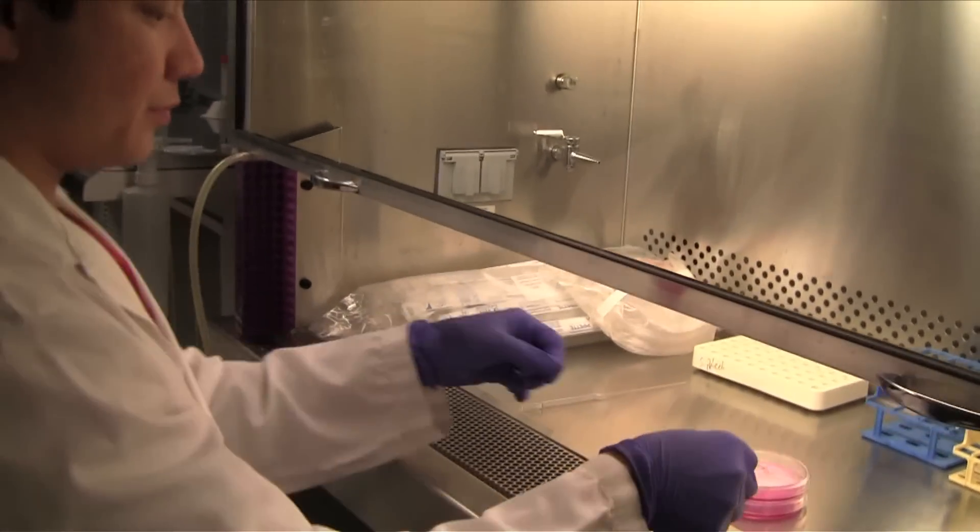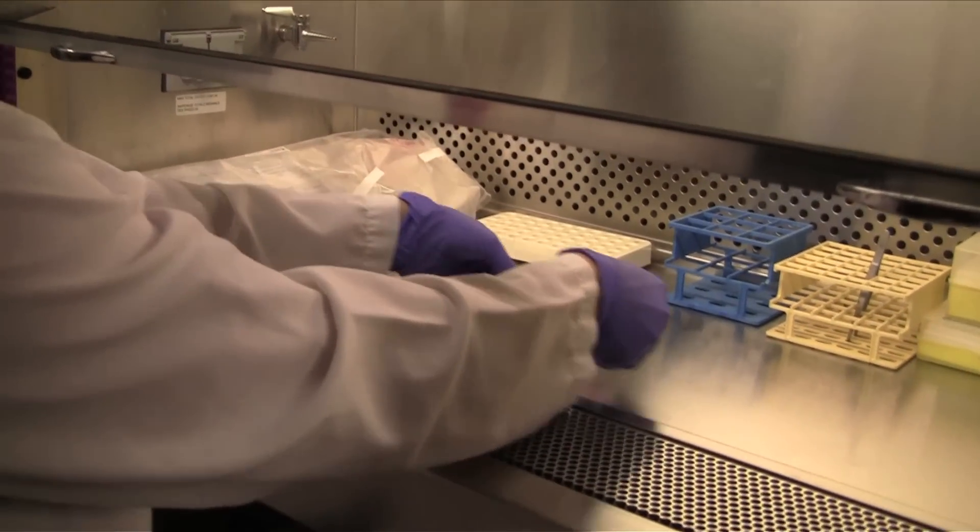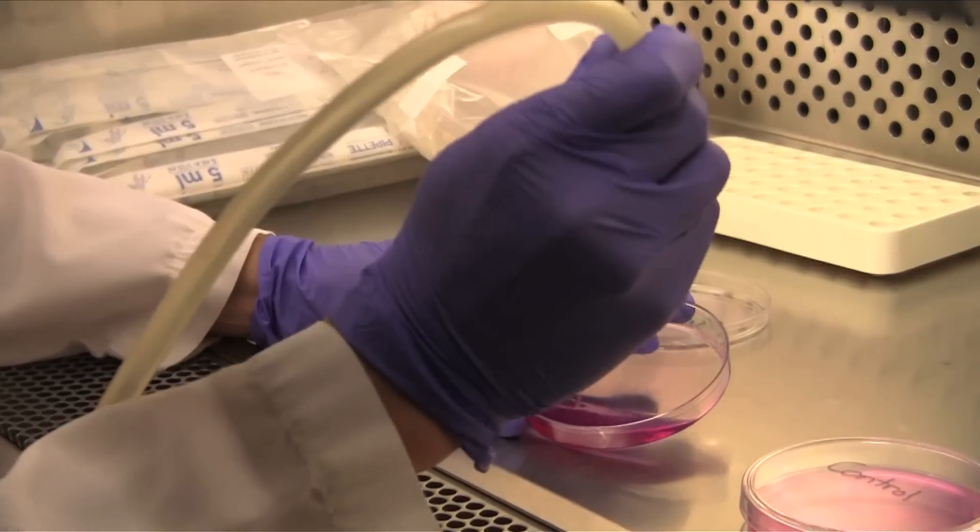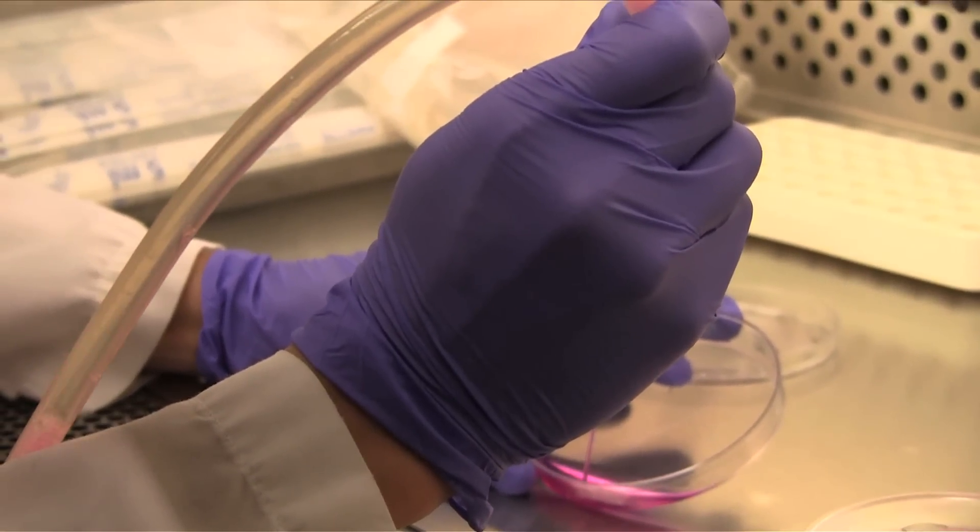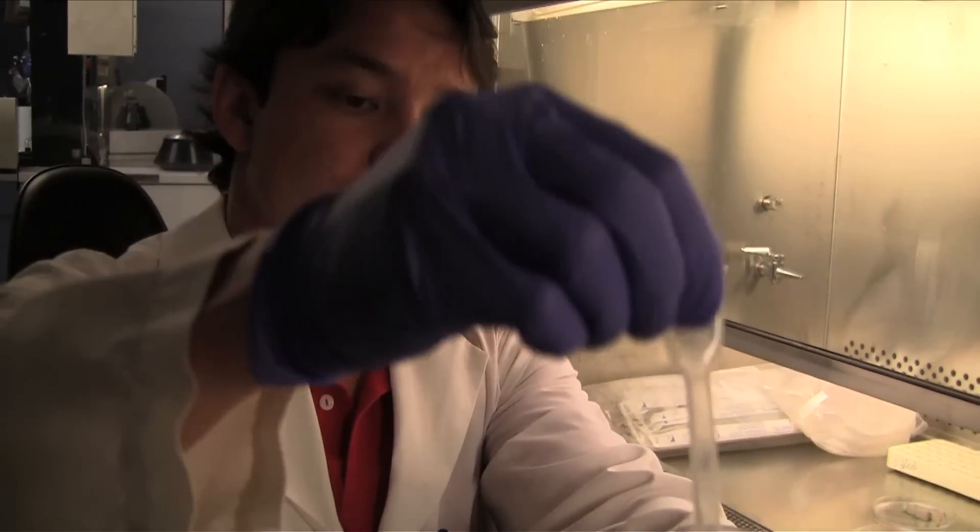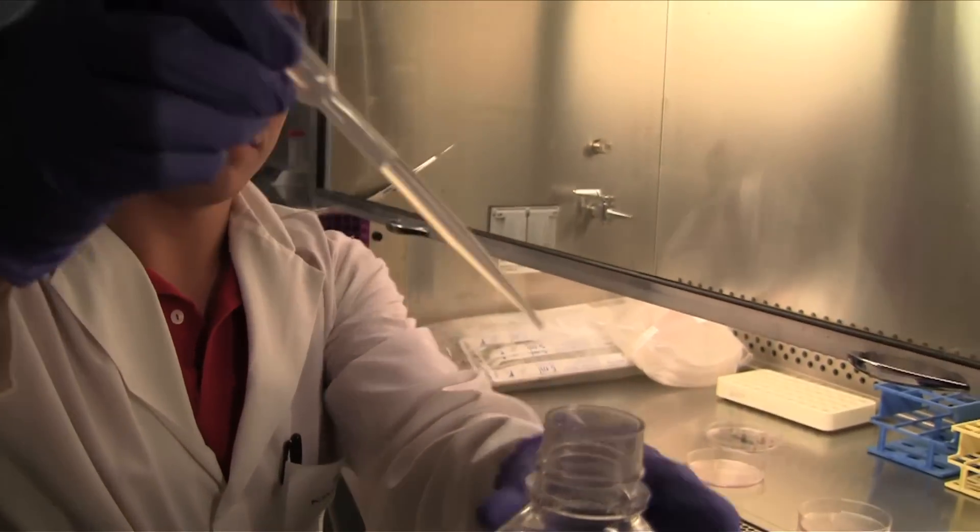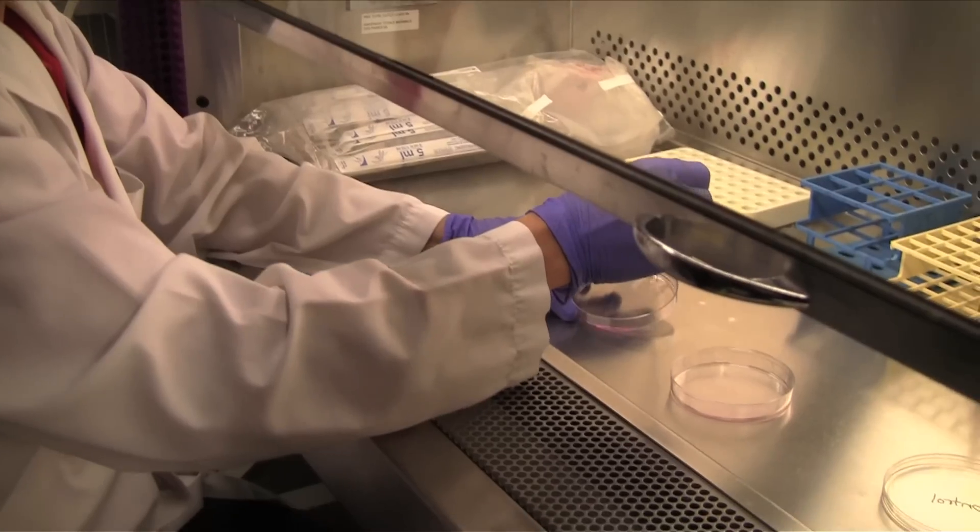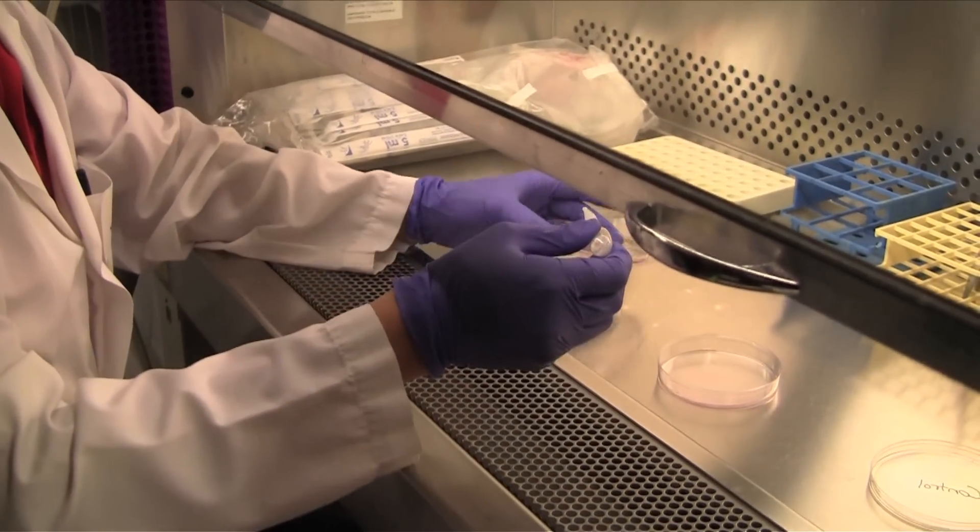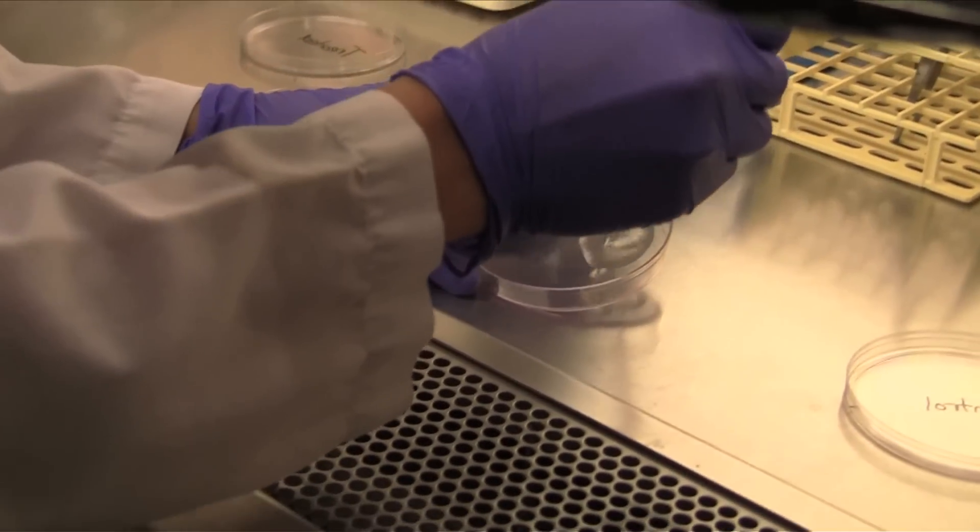Transfer the dishes into the laminar flow hood and aspirate the medium using vacuum suction. Rinse the cells on the bottom of the dish twice with ice cold phosphate buffered saline, also known as PBS, and aspirate as much PBS as possible after the second rinse.